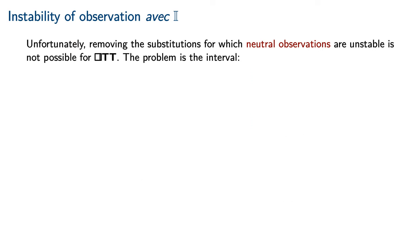Unfortunately, just removing the substitutions for which neutral observations are unstable is not possible for cubical type theory, unlike the case for ITT. The problem originates with the interval.